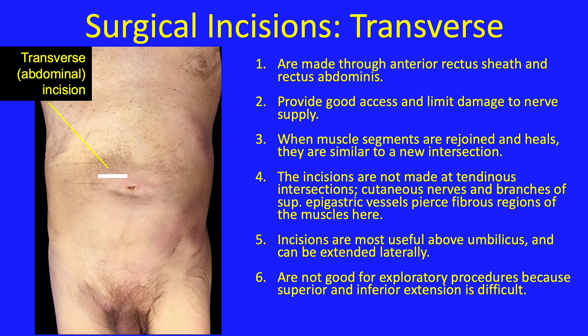The transverse incisions are made through the anterior rectus sheath and rectus abdominis. They can provide good access and limit damage to nerve supply. Recall the in-series arrangement of the rectus abdominis — when muscle segments are rejoined and healed, they are similar to a new intersection. However, the incisions are not made at tendinous intersections, as cutaneous nerves and branches of superior epigastric vessels pierce fibrous regions of the muscles there. These incisions are most useful above the umbilicus and can be extended laterally, but they are not good for exploratory procedures because superior and inferior extensions are difficult.